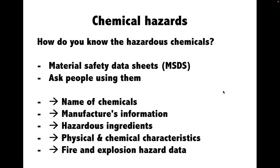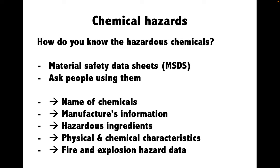All reagents used in the laboratory are chemical compounds and you need to be aware of their potential risks and hazards. You can find the full details of each chemical agent in the document called Material Safety Data Sheets, or MSDS, or you can learn from your laboratory co-workers. The MSDS provides all information about the chemicals and is available online as international legislation. The information includes the name of the chemicals, the manufacturer's information, the hazardous ingredients, and the physical and chemical characteristics.